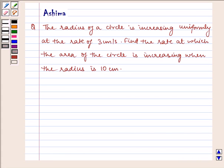Hello and welcome to the session. Let us understand the following question: The radius of a circle is increasing uniformly at the rate of 3 cm per second. Find the rate at which the area of the circle is increasing when the radius is 10 cm.